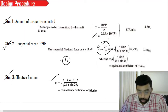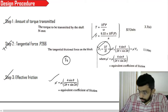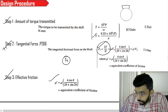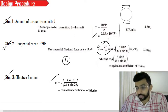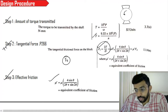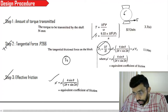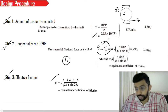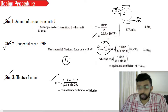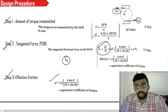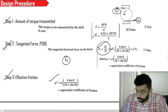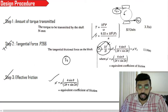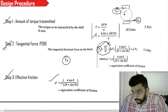One issue we have to understand is that in step number 2, there is a slight variation. For single shoe brake, from the value of T we were directly getting the value of Ft. But the problem with the double shoe brake is that you have one shoe over here and another shoe over here. Suppose you are taking an anti-clockwise rotation — here Ft is going to act like this, and here Ft is going to act like this. So, here you have Ft1 and Ft2.